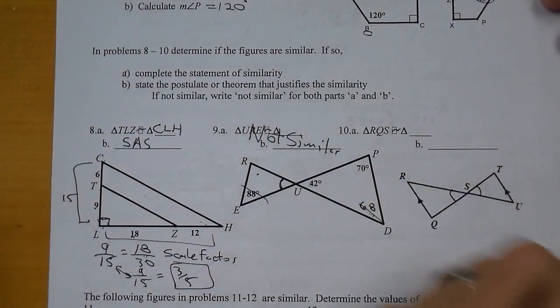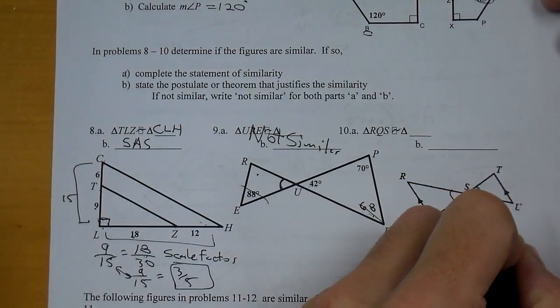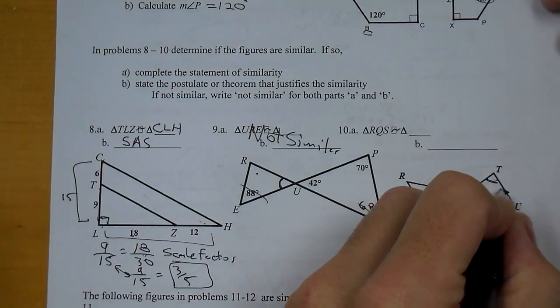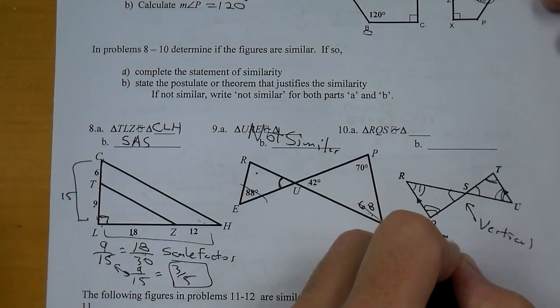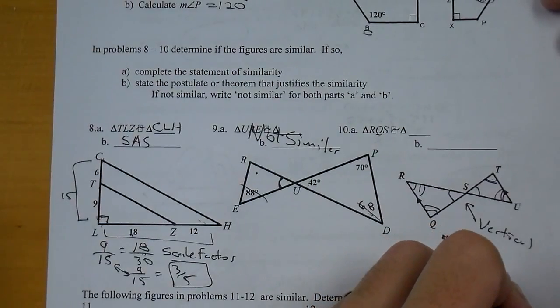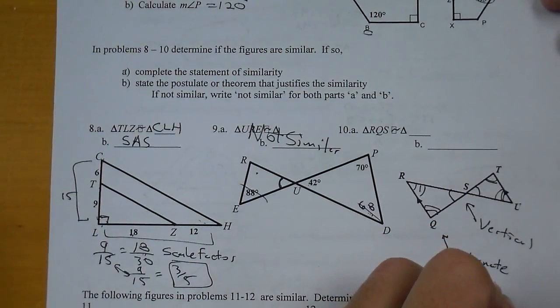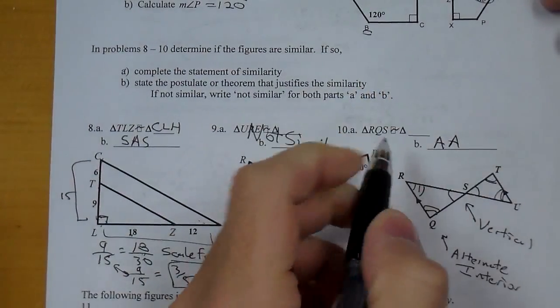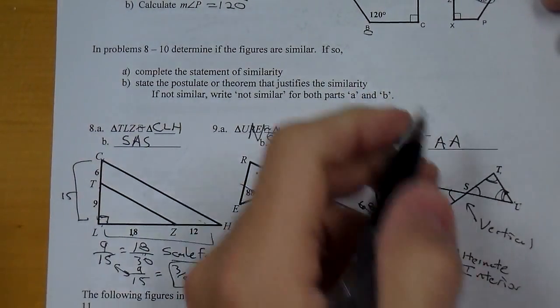Last one here, I have vertical angles. I also have alternate interior. And I know I only need two angles for angle, angle. But I actually have all three, so you could really state any of the two of the three. So it is angle, angle. And we would say that RQS is similar to UTS.